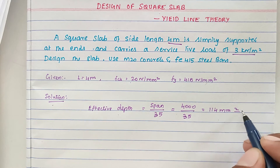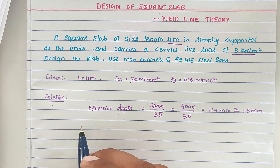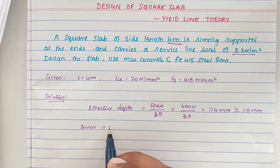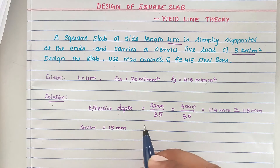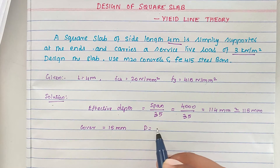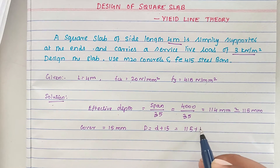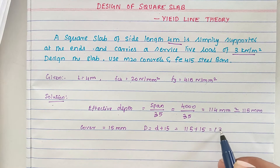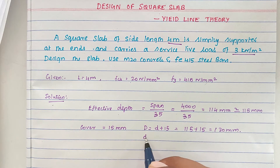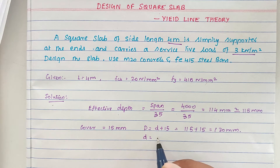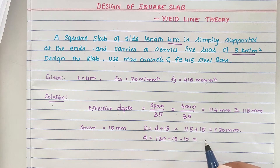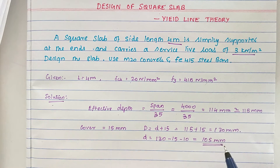We approximately take the effective depth as 115 mm. Next, we provide a cover of 15 mm. So the overall depth D equals 115 plus 15, which is 130 mm. Therefore, the effective depth d equals 130 minus 15 (cover) minus reinforcement diameter, giving us 105 mm.